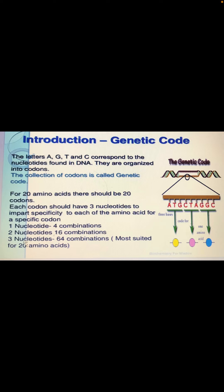We are going to start this process with the help of genetic codes. The letters A, G, T, and C correspond to the nucleotides found in DNA. They are organized into three-letter code words called codons, and the collection of those codons makes up the genetic code. It was basically impossible to understand protein synthesis or explain mutations before the genetic code was elucidated. For 20 amino acids, there should be 20 codons.